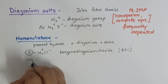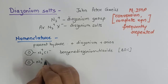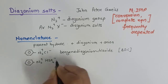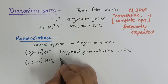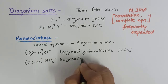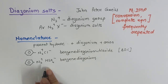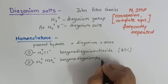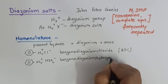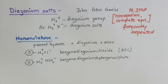One more example: a benzene ring with N2+ and HSO4− — the parent hydrocarbon is benzene, then 'diazonium', then HSO4− which is hydrogen sulfate — giving benzene diazonium hydrogen sulfate. This is how we carry out the nomenclature of diazonium salts.